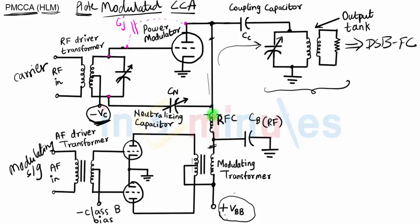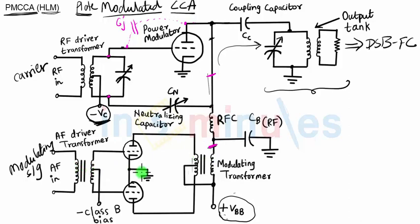The next set of components is RFC, which stands for radio frequency choke, and CB. This structure of inductor and capacitor forms a high-pass filter — it allows the passage of low-frequency signals but blocks high-frequency signals. On the plate side, the plate current is generated at the frequency of the carrier signal, so it is a high-frequency signal above the RFC. Below the RFC, we have the modulating signal coming from the power amplifier, which is of low frequency. Because this structure acts as a high-pass filter, the modulating signal will be passed towards the tube side.